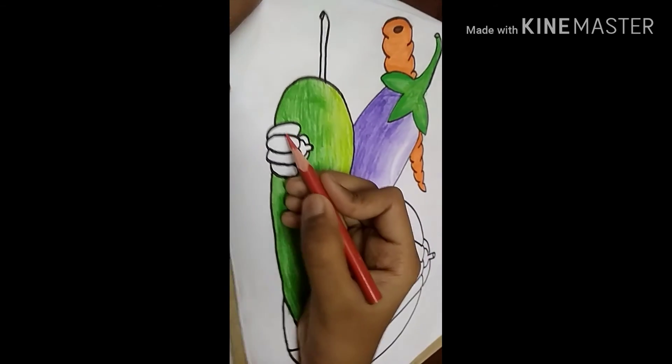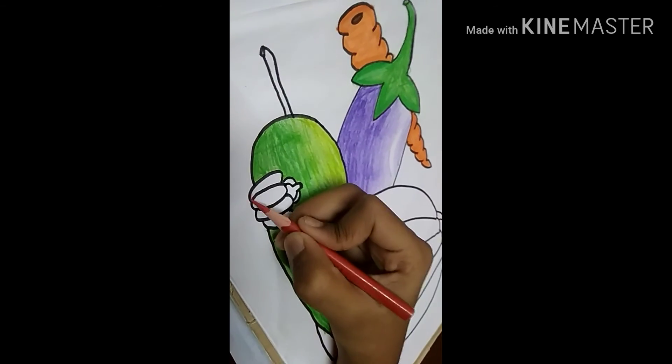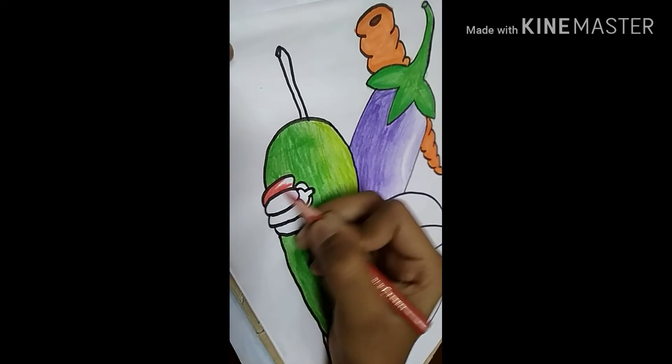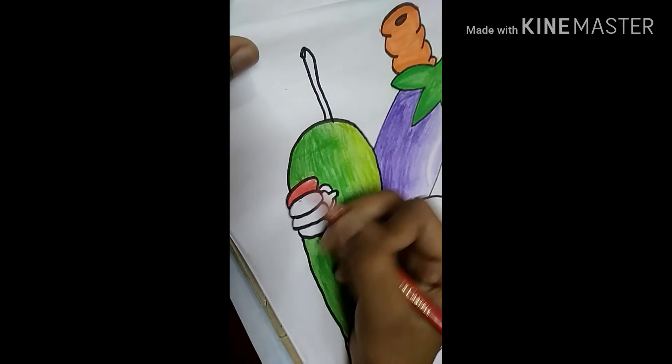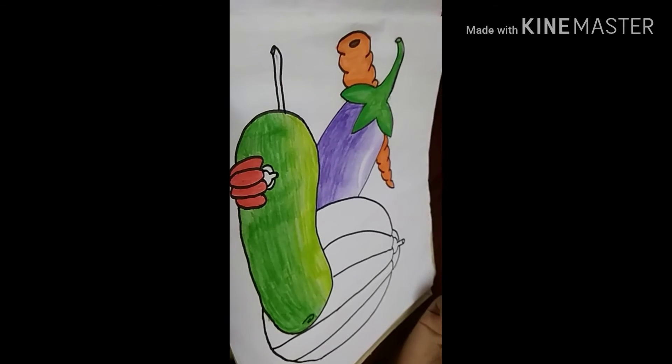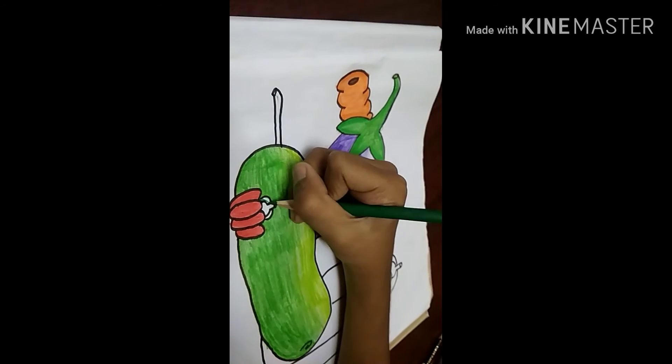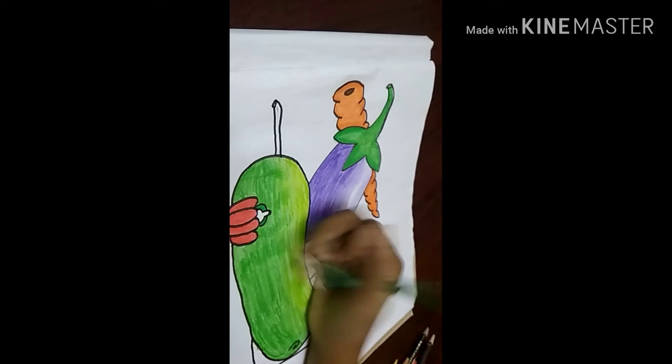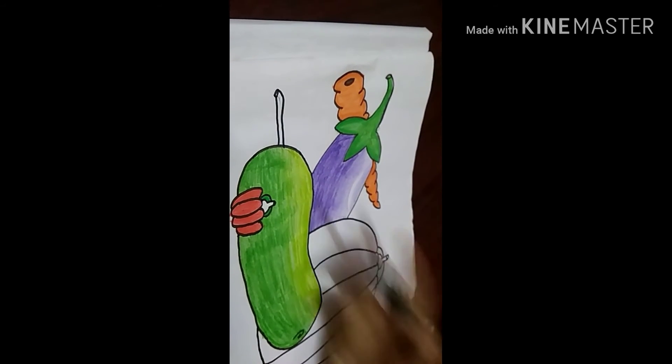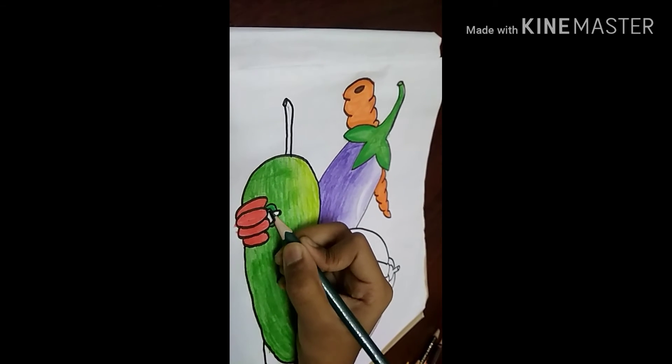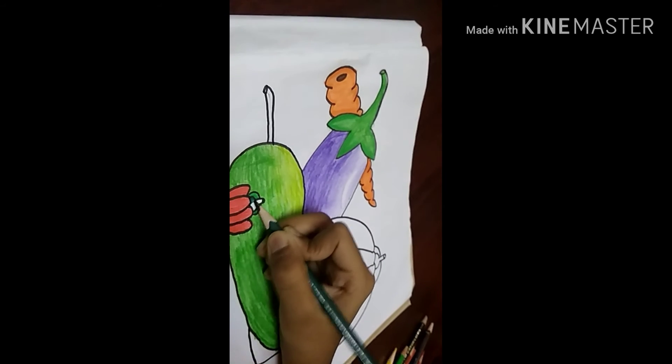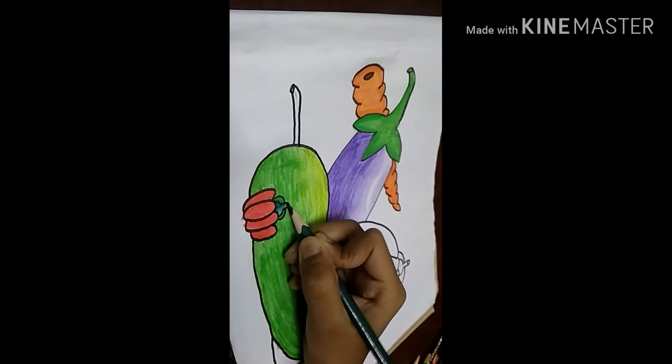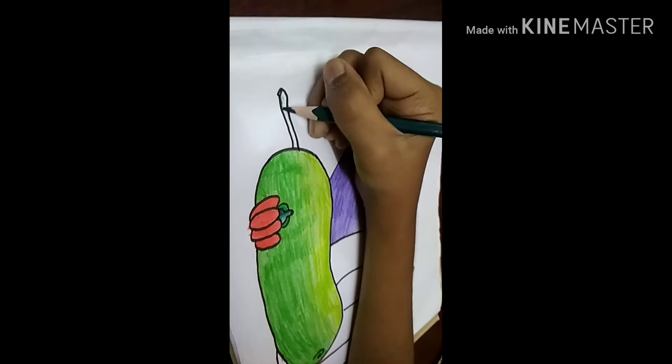Now color the capsicum with red, full dark bottle green, dark green for this too.